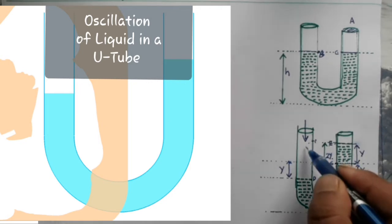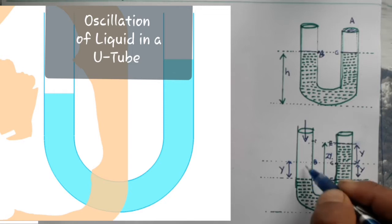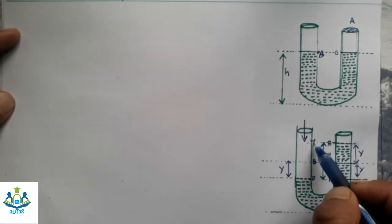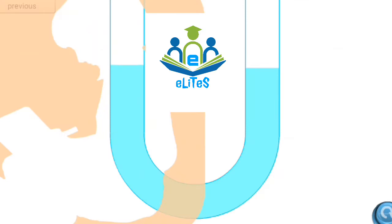Now when I blow this air and water goes down and it raises up to Y, it is the 2Y height of the water column which makes it oscillate. When it goes down, the water from level E will move to the level C, but due to inertia of motion it will not stop at C. It will go to the mark F and the water will rise up to this E dash.